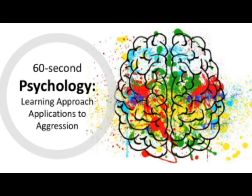The learning approach uses operant conditioning and social learning theory to explain aggression. Operant conditioning is the theory that behaviour is learned through consequence. If a behaviour is followed by reinforcement, it is more likely to be repeated, and if a behaviour is followed by punishment, it is less likely to be repeated.